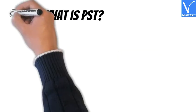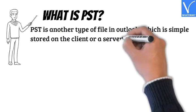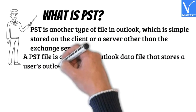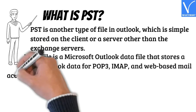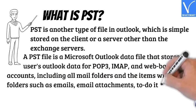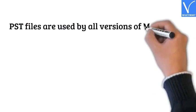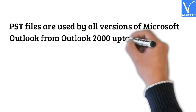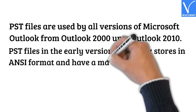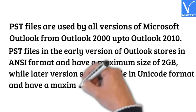What is PST? PST is another type of file in Outlook, which is simply stored on the client or a server other than the Exchange servers. A PST file is a Microsoft Outlook data file that stores a user's Outlook data for POP3, IMAP, and web-based mail accounts, including all mail folders and items such as emails, email attachments, to-do items, appointments, contacts, and more. PST files are used by all versions of Microsoft Outlook from Outlook 2000 up to Outlook 2010. Earlier versions store in ANSI format with a maximum size of 2GB, while later versions save in Unicode format with a maximum size of 20GB or 50GB.